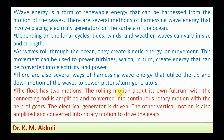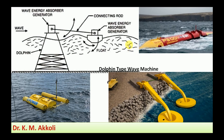The float has two motions: a rolling motion about its own fulcrum, and a vertical up and down motion. The rolling motion is amplified and converted into continuous rotary motion with the help of gears, and that rolling motion of the float is connected through gears to the generator to generate electricity. The vertical motion is also amplified and converted into rotary motion, connected through gears to produce continuous rotary motion.